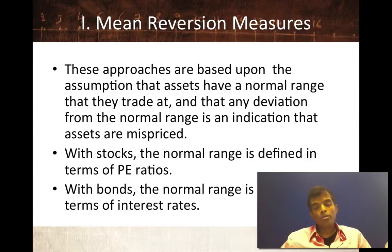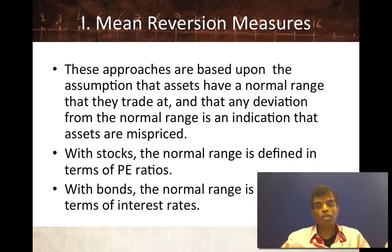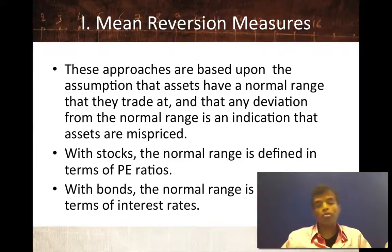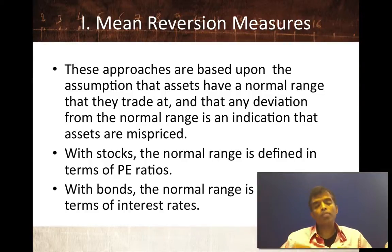With T-bonds or with bonds in general, the normal range is usually specified in terms of interest rates. We assume that there is some normal interest rate, a normal T-bond rate. And if the T-bond rate is below that norm, it's going to revert back up. And if the T-bond rate is above that norm, it's going to revert back down. So all of these approaches are built on the presumption that things revert back to the norm.